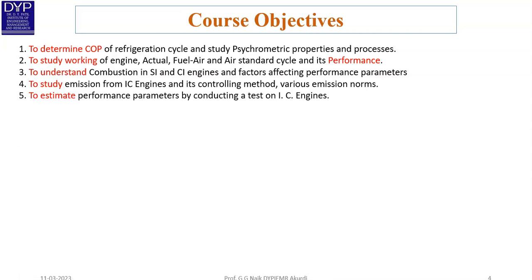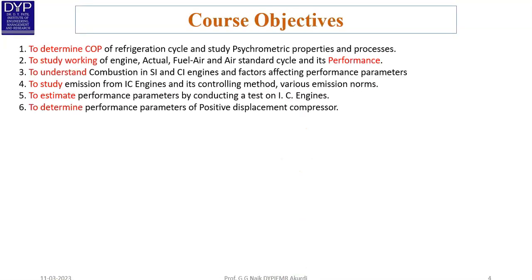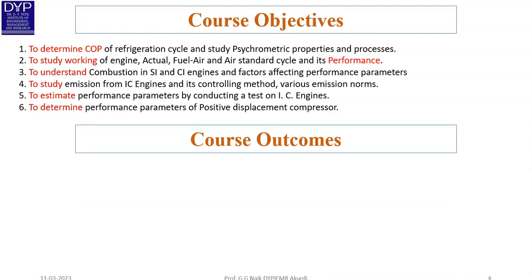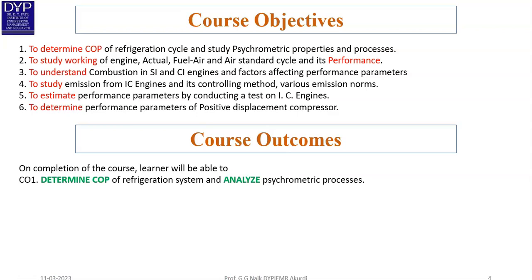The fifth objective is to estimate performance parameters by conducting a test on IC engines, which will be covered in practicals. The sixth objective is to determine performance parameters of positive displacement compressors. Regarding course outcomes, on completion of this course, learners will be able to: CO1 — determine the COP of a refrigeration system and analyze psychrometric processes; CO2 — discuss basics of engine terminology, air standard cycles, and actual cycles.